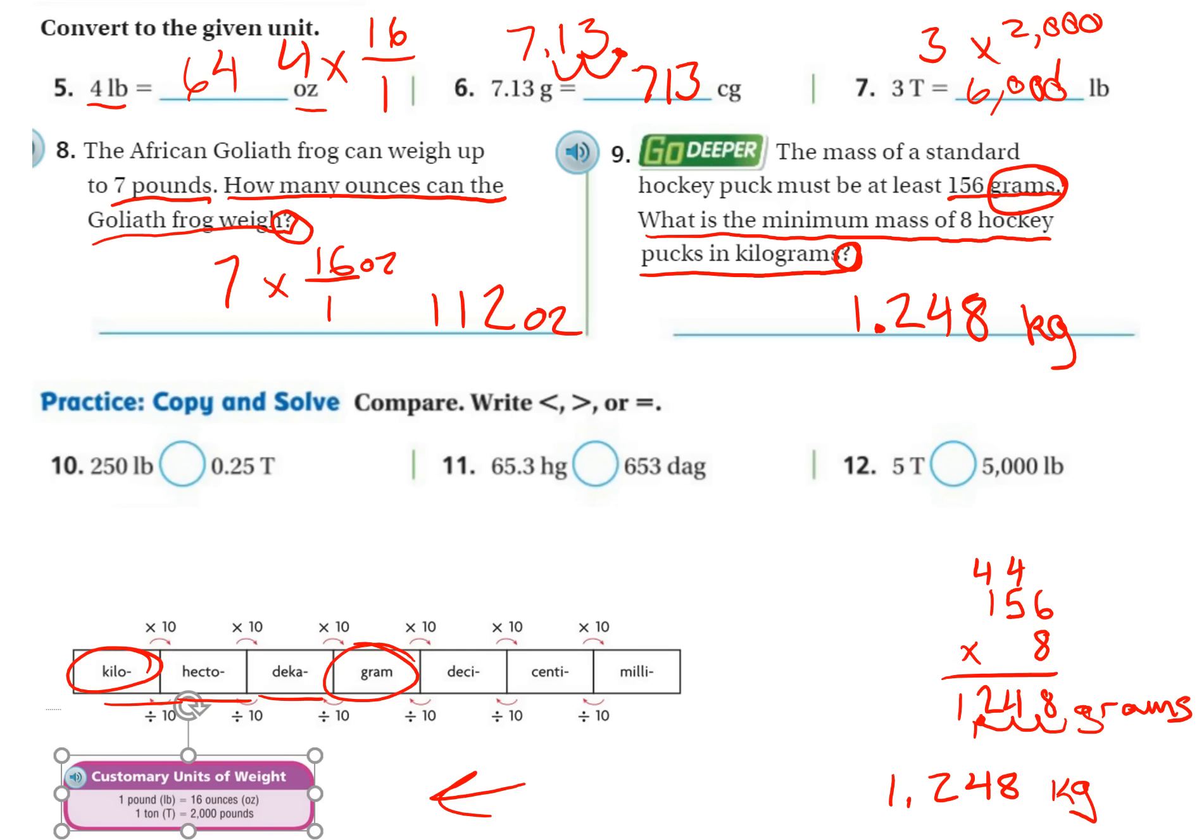All right, next we're comparing different amounts. So 250 pounds to 0.25 tons. So again, this is kind of your choice. Do you want to change them both to pounds, or do you want to change them both to tons? Let's see. I want to change it to tons. So I have 250 pounds out of 2,000 would be one ton.